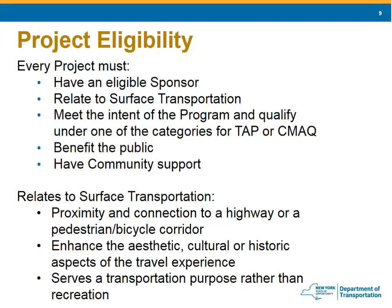A project relates to surface transportation by proximity and connection to a highway or pedestrian and bicycle corridor. It may enhance the aesthetic, cultural, or historic aspects of the travel experience, and it serves a transportation purpose rather than recreation. Examples of ineligible items that may have been done under other programs include equipment purchases and buildings such as restrooms and visitor centers. Additional ineligible items and work types are listed in Appendix B under the different project categories.